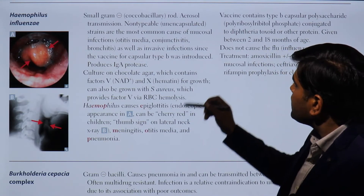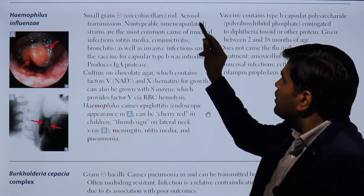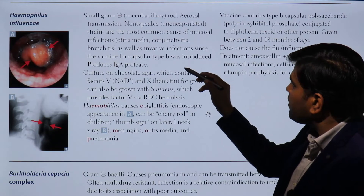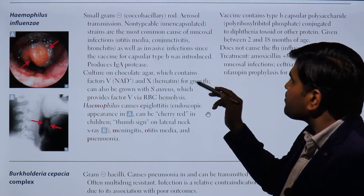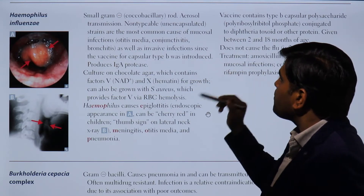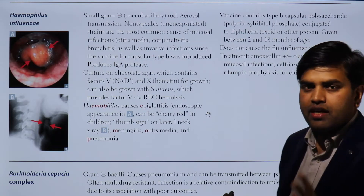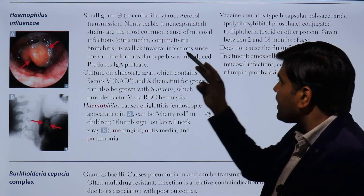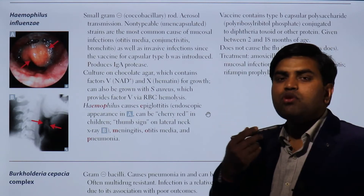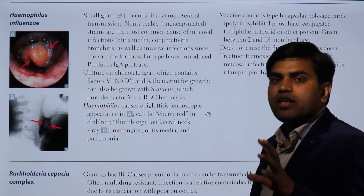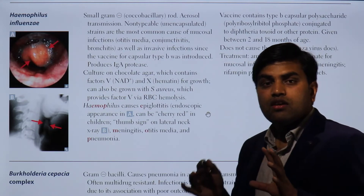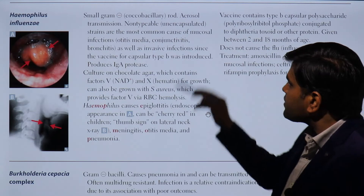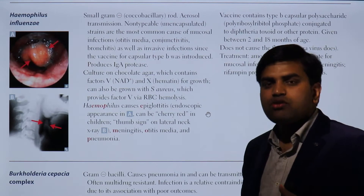These gram-negative bacilli transmit through aerosol transmission. There are two types: the non-typeable, which is the unencapsulated strain, is the most common cause of mucosal infections. The non-capsulated strain causes infections like otitis media, conjunctivitis, and bronchitis — these are the less virulent strains, also called non-typeable.